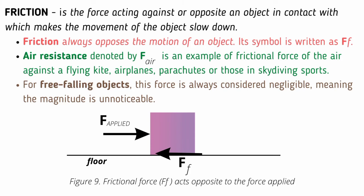Air resistance, denoted by F air is an example of frictional force of the air against a flying kite, airplanes, parachutes, or those in skydiving sports. For free-falling objects, this force is always considered negligible, meaning the magnitude is unnoticeable.